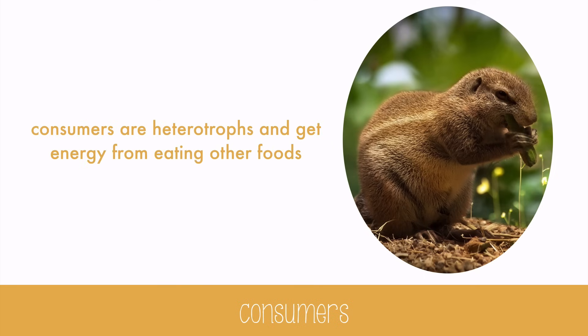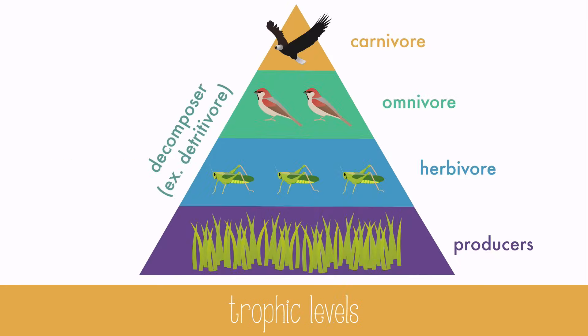Consumers are heterotrophs and get energy from eating other foods. We can break consumers into more categories as well based on their diets. Herbivores, like grasshoppers, will eat only producers.